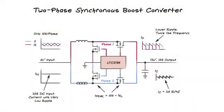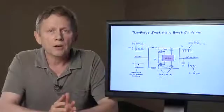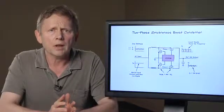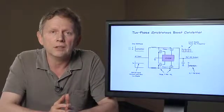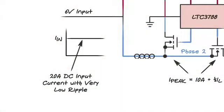In this converter, each phase handles only one half of the current compared to single-phase converter. The two phases are running 180 degrees out of phase, which results in lower input and output ripple currents. Compared to single-phase converter, our two-phase LTC 3788 circuit has virtually no input ripple current.